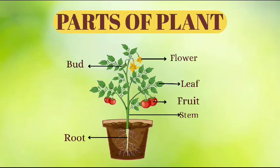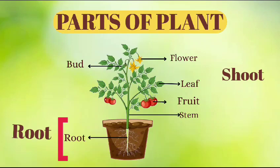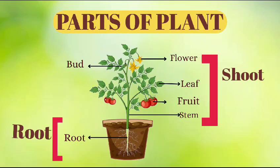Parts of Plant. A plant has two main parts: the root and the shoot. The part below the ground is called the root. The part above the ground is called the shoot.